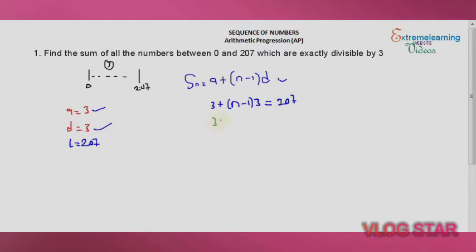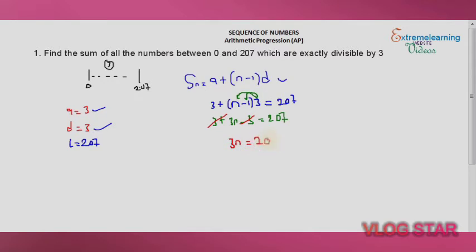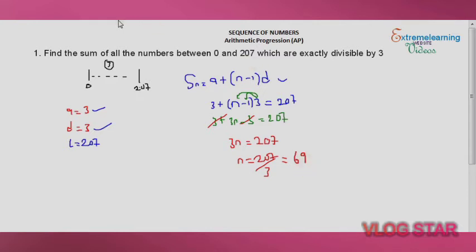Expanding: 3n − 3 = 207, then cancelling gives 3n = 207, so n = 207 ÷ 3 = 69. So we have 69 terms.